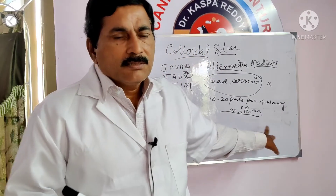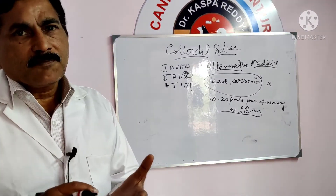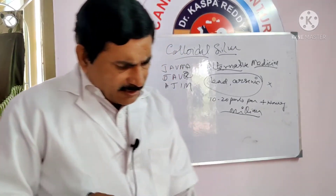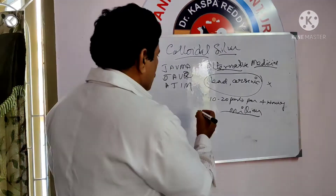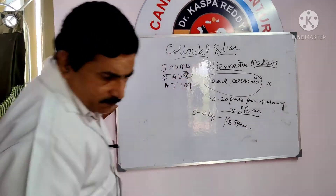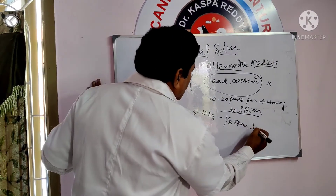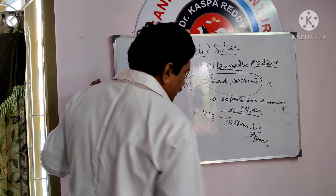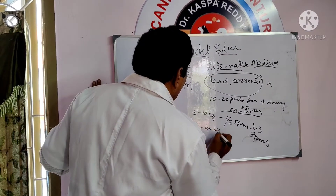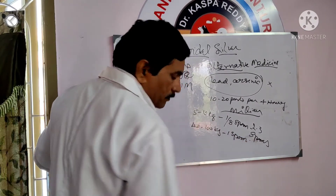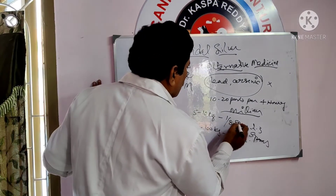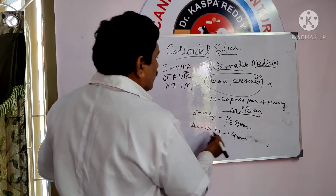So if you have wounds, skin diseases, ear infections, eye infections, or cancer, here are the dosages: for 5 to 10 kg, one-eighth spoon to two-thirds spoon. For 5 to 10 kg, one-eighth spoon into 2 to 3 spoons. For 40 to 100 kg, one spoon. This is a low dose.